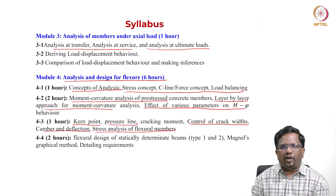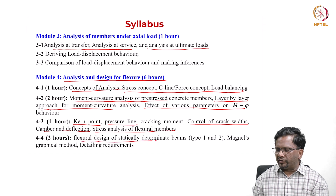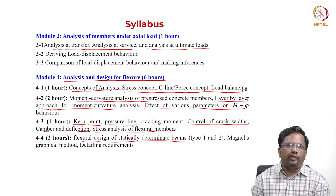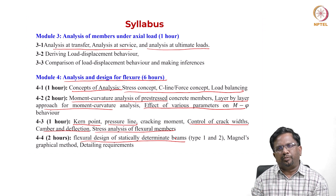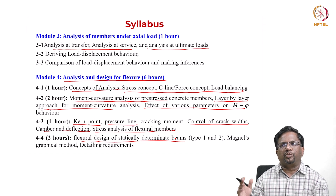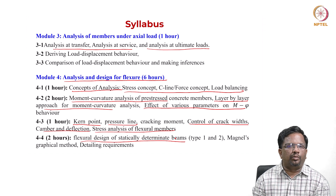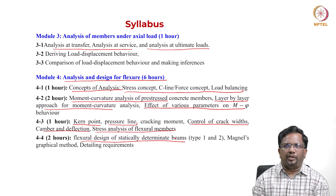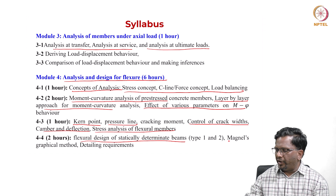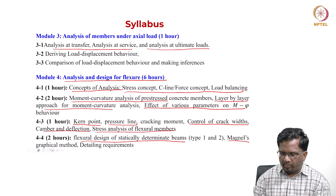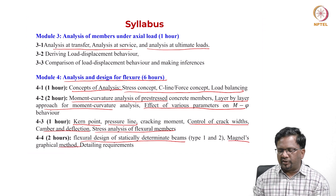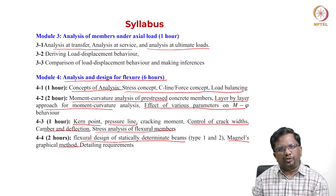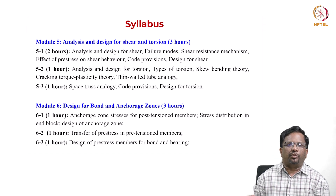The fourth part covers flexural design of statically determinate beams. We classify the design of pre-stress members as Type 1, Type 2, or Type 3, and we will cover how to design these sections. There is also an elegant method called the Magnel graphical method that we will spend some time on, and finally we will cover detailing requirements.